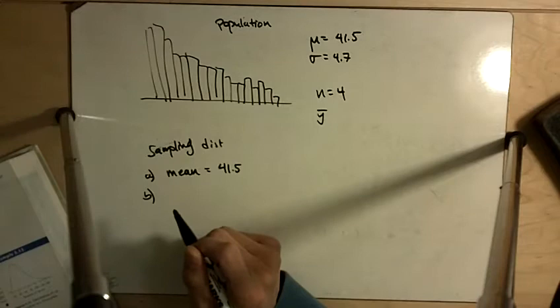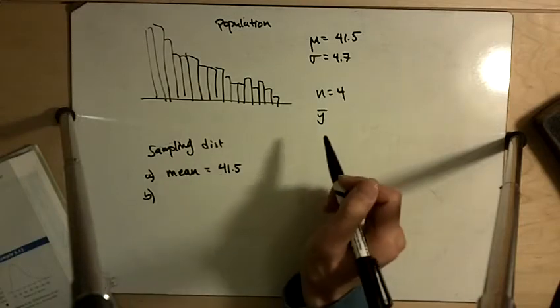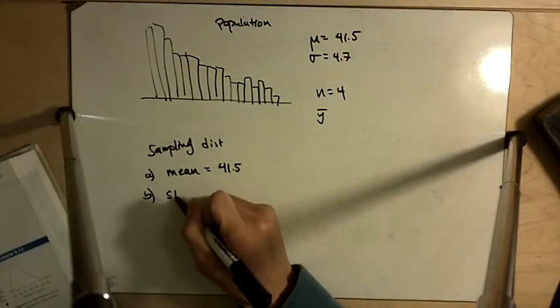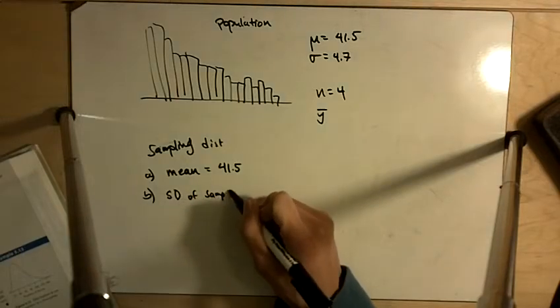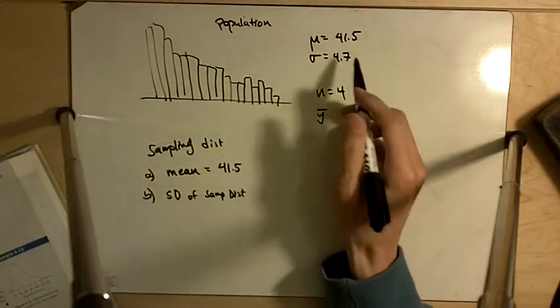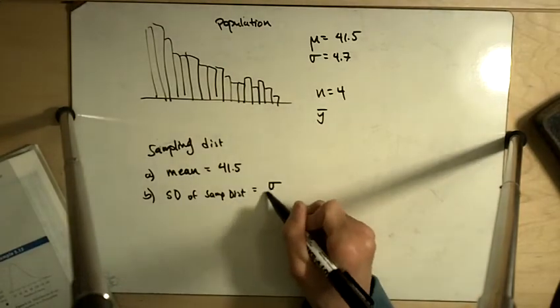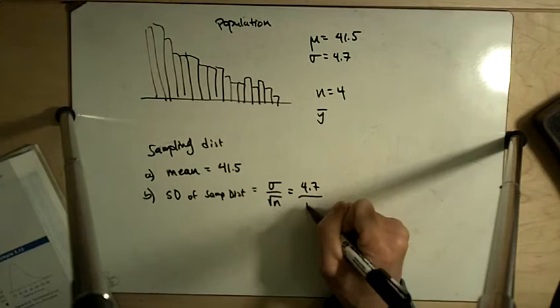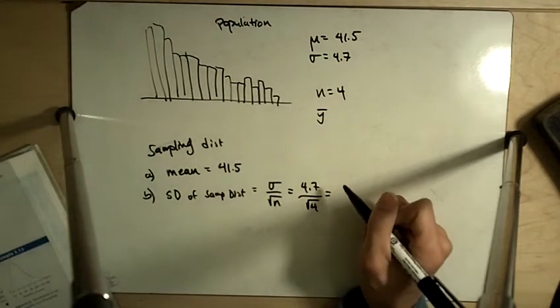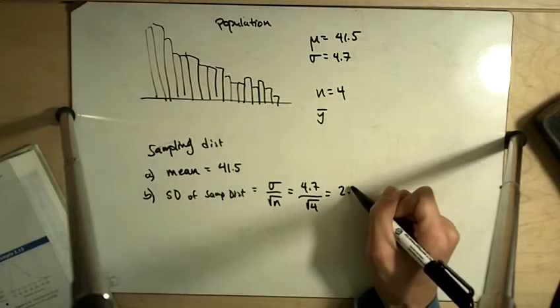And part b says what is the standard deviation of the sampling distribution? The standard deviation of the sampling distribution is going to be sigma divided by the square root of n. So 4.7 divided by the square root of 4. So in that case, it's going to be 2.35.